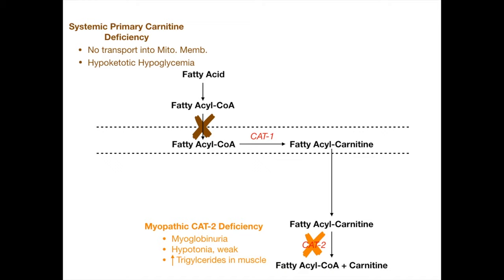In myopathic CAT-2 deficiency, look for: increased creatinine from kidney damage caused by myoglobin passing through the kidney; dark urine from myoglobinuria; signs of rhabdomyolysis such as weak, painful, tender, hypotonic muscles; and elevated CK from muscle breakdown. These are classic lab findings in rhabdomyolysis.